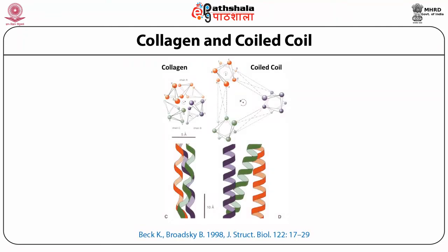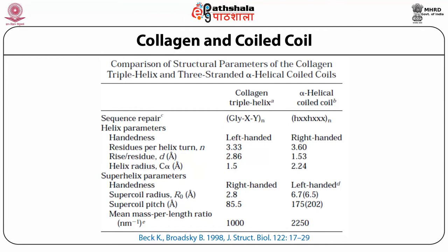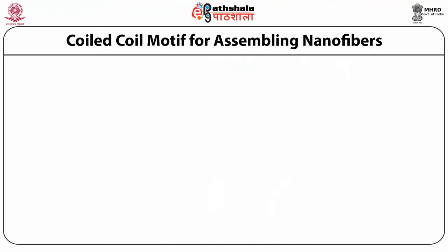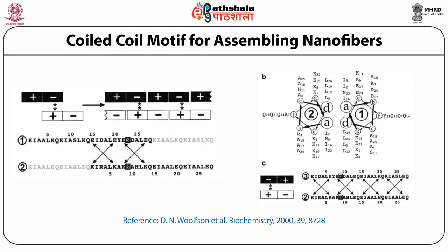Comparing the collagen superhelix and the coiled coil superhelix: collagen has the sequence glycine-X-Y, where X-Y can be proline and hydroxyproline; coiled coil has the heptad H-X-X-H-X-X-X, with H for hydrophobic and X for charged positions. In terms of individual helix handedness, the individual helix in collagen is left-handed, whereas in alpha helical coiled coil it is right-handed. However, for superhelix handedness, collagen's triple helix is right-handed overall, while the alpha helical coiled coil superhelix is left-handed.